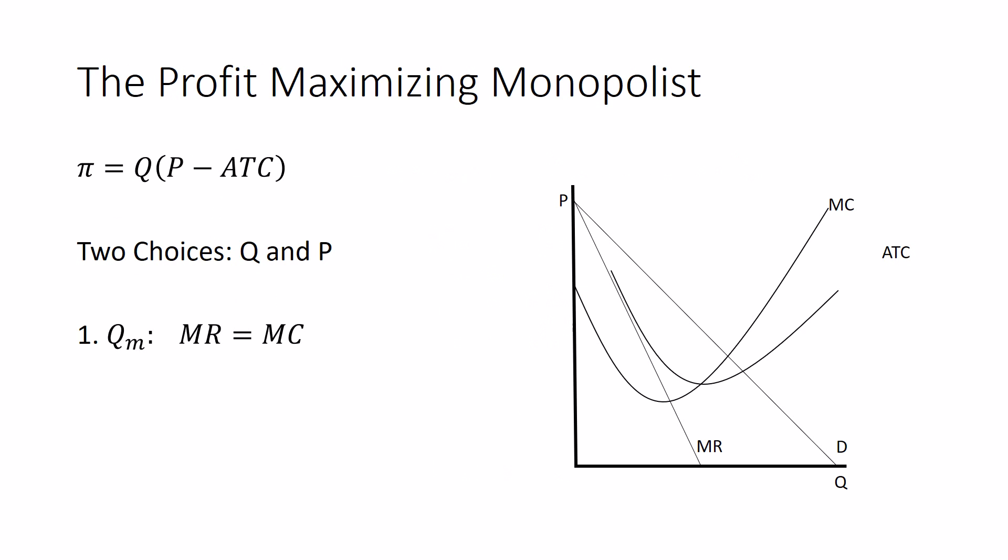Step one, or the first choice, to choose the monopoly quantity. Increase production until marginal revenue equals marginal cost. And we've already explained why we do this.